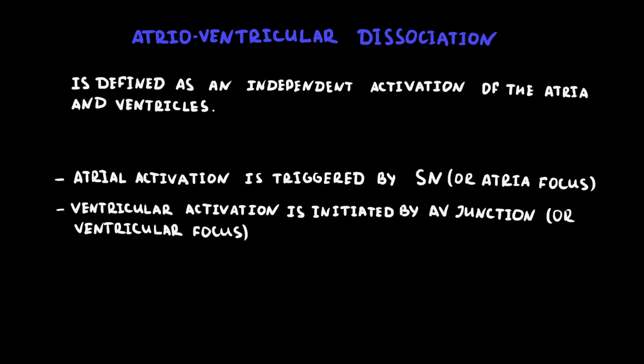Atrioventricular dissociation is defined as an independent activation of the atria and ventricles. Atrial activation is triggered by one pacemaker, usually the sinus node and rarely the atrial focus, while the ventricular activation is initiated by another, either the AV junction or ventricular focus.